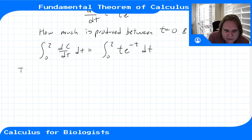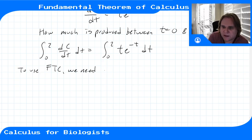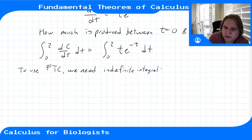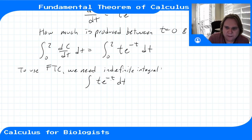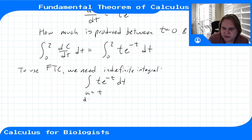A u-substitution won't work here, so we use integration by parts. Let u = t, dv/dt = e^(−t). Then du/dt = 1 and v(t) = −e^(−t). Integration by parts says the integral equals u·v minus the integral of v·du.